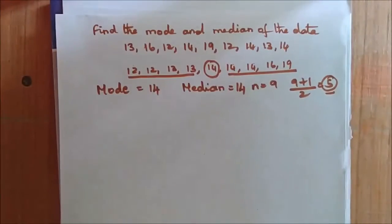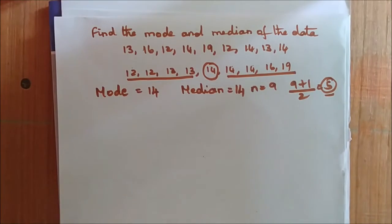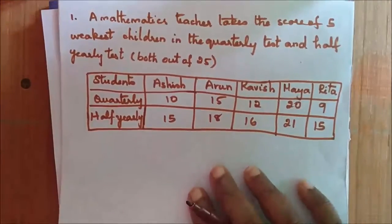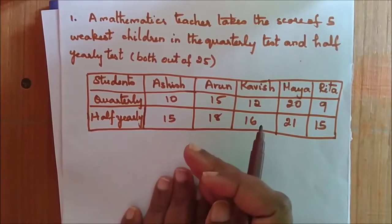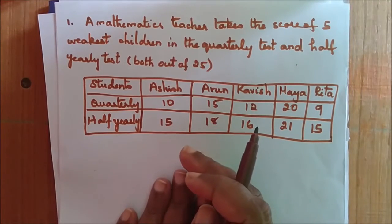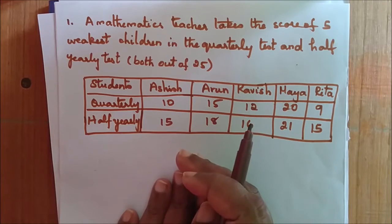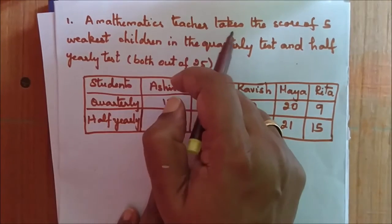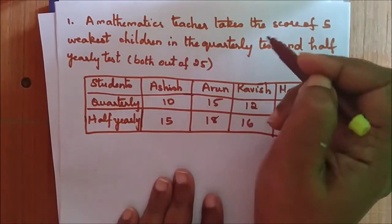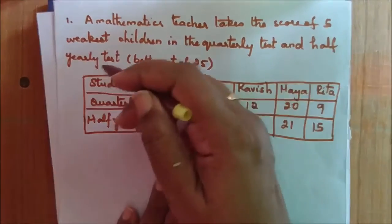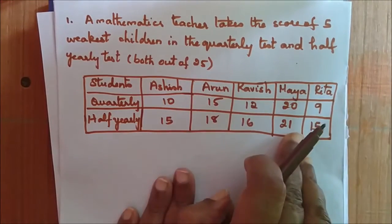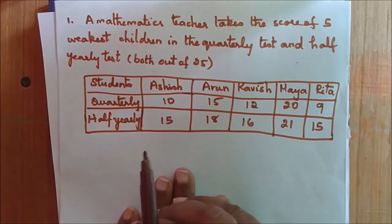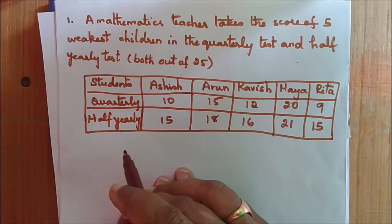Now we will see another graph. Let us now plot this data on a bar graph. This is a double bar graph. A mathematics teacher takes the score of 5 weakest children in the quarterly test and half-yearly test. Both the tests are out of 25. So these are the marks and these are the name of the students. Now let me plot these values on a bar graph.